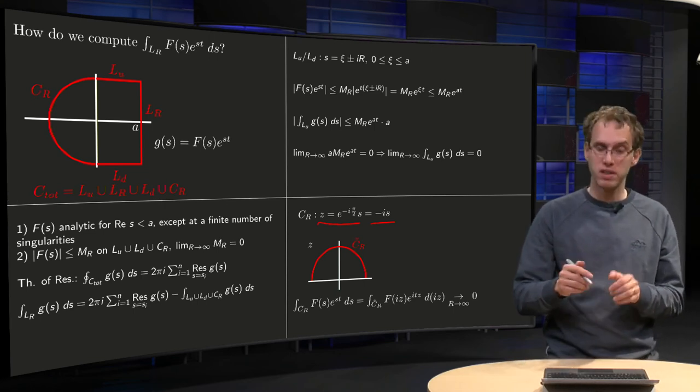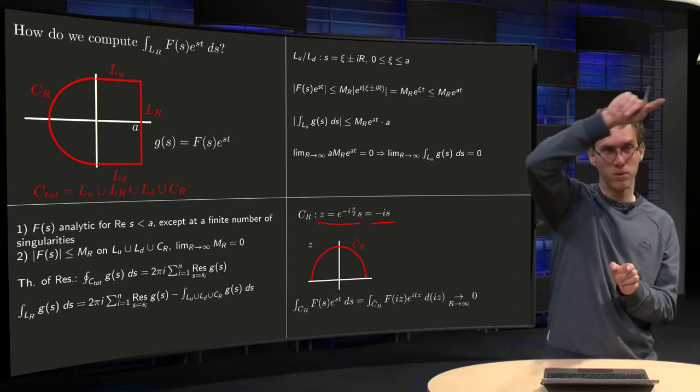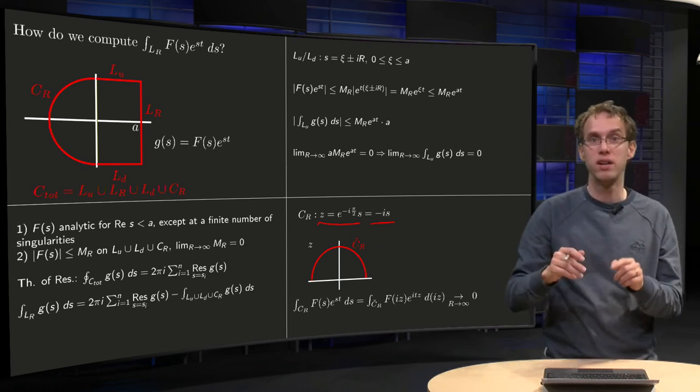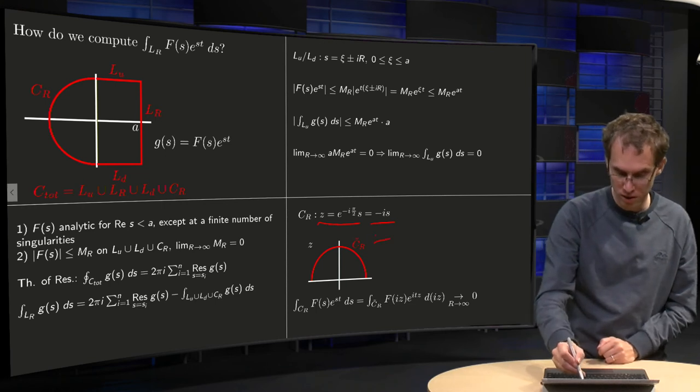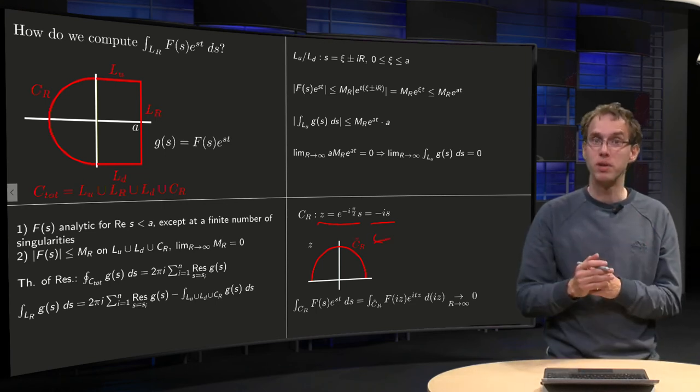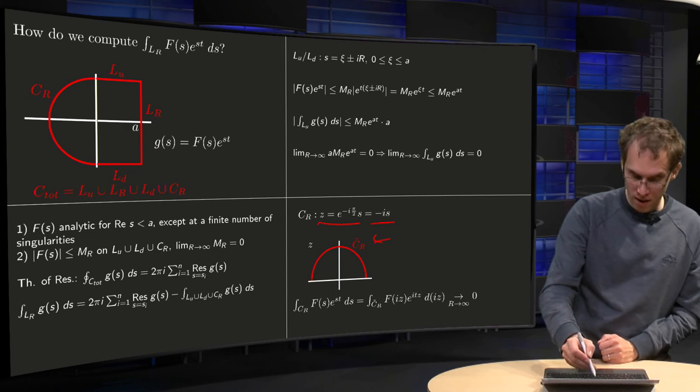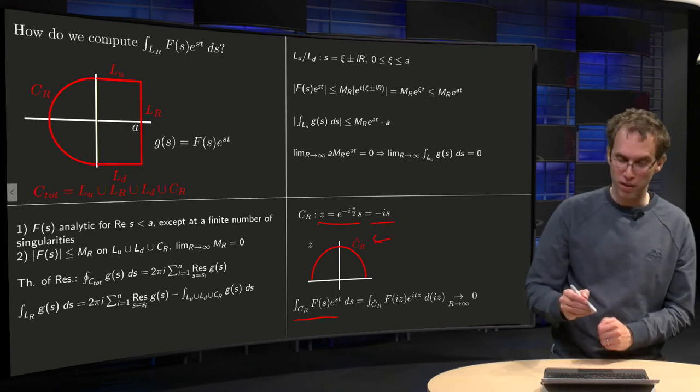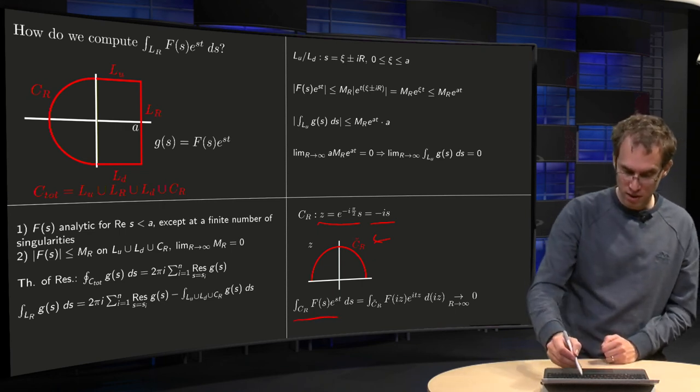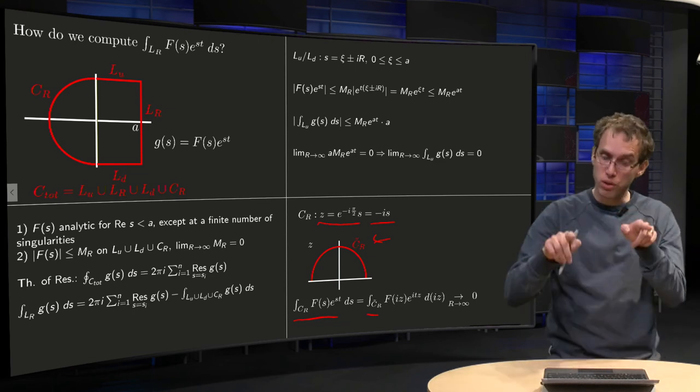So what do we get? Instead of the circle which is in the left of the plane, we get the circle C_R tilde in the upper half plane. What do we get for our integral?